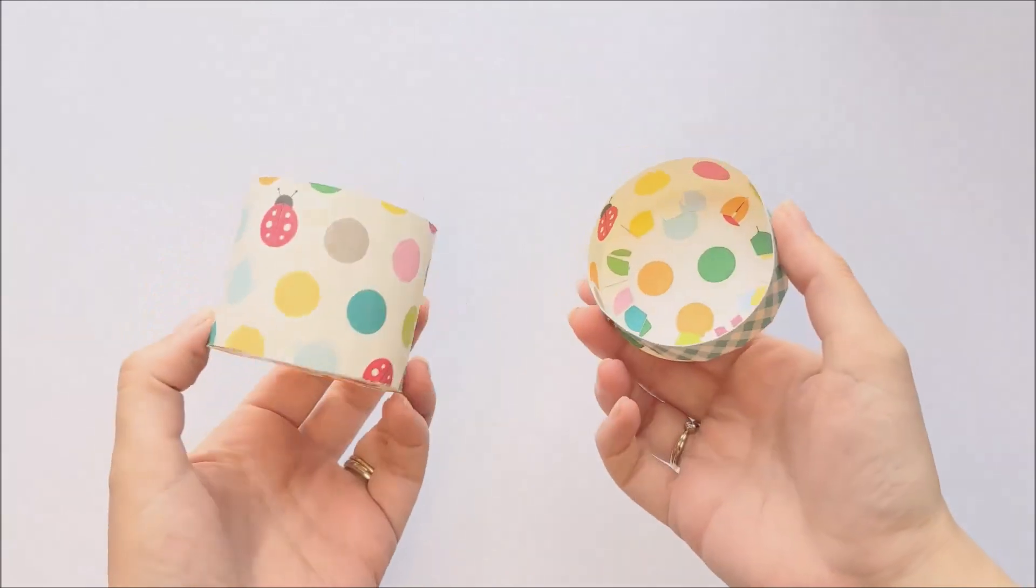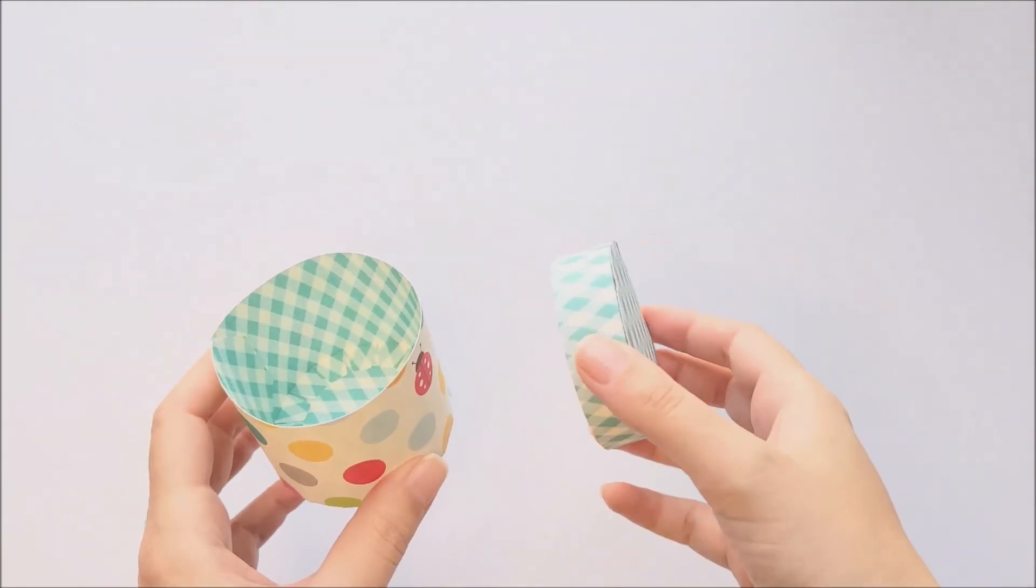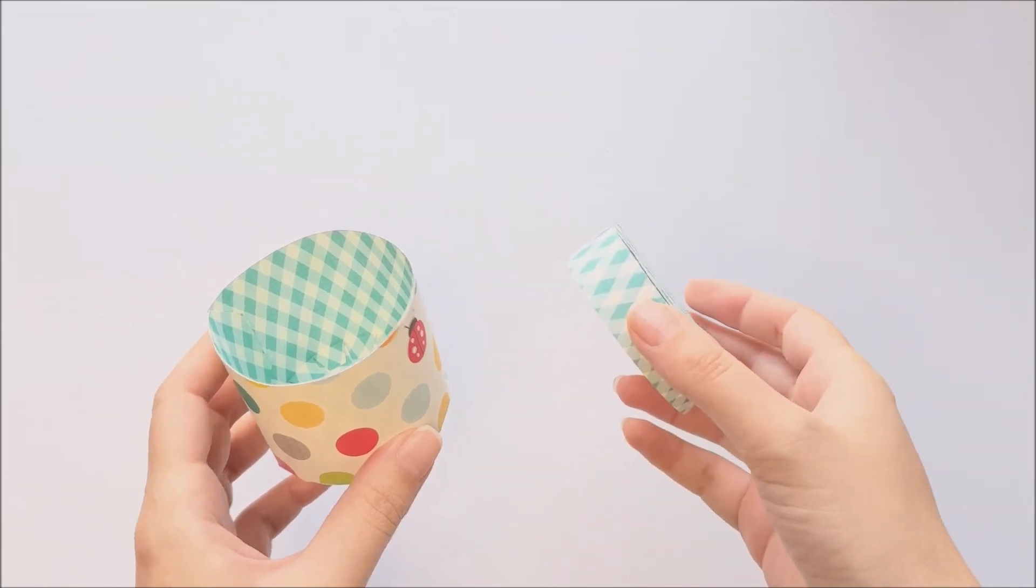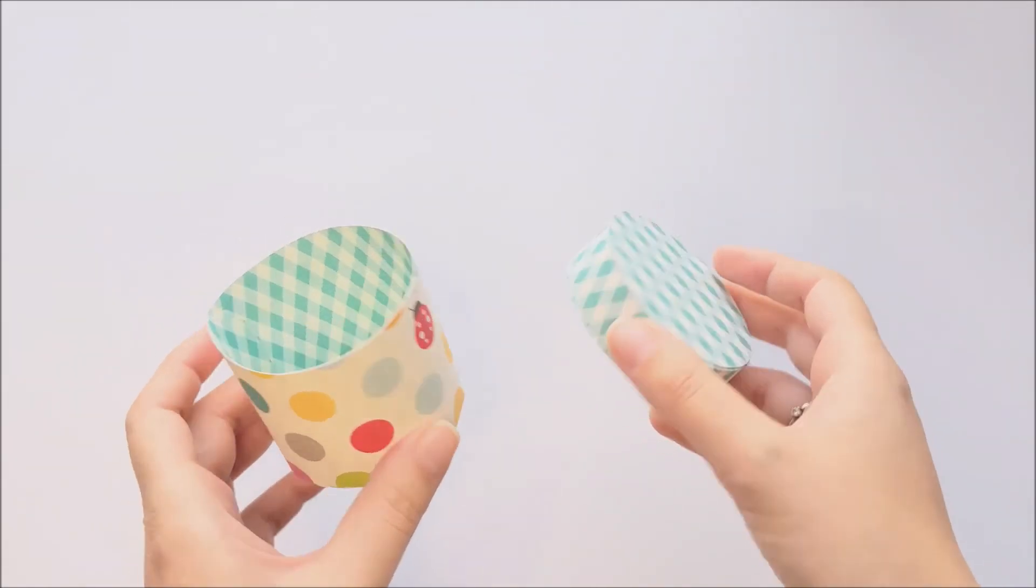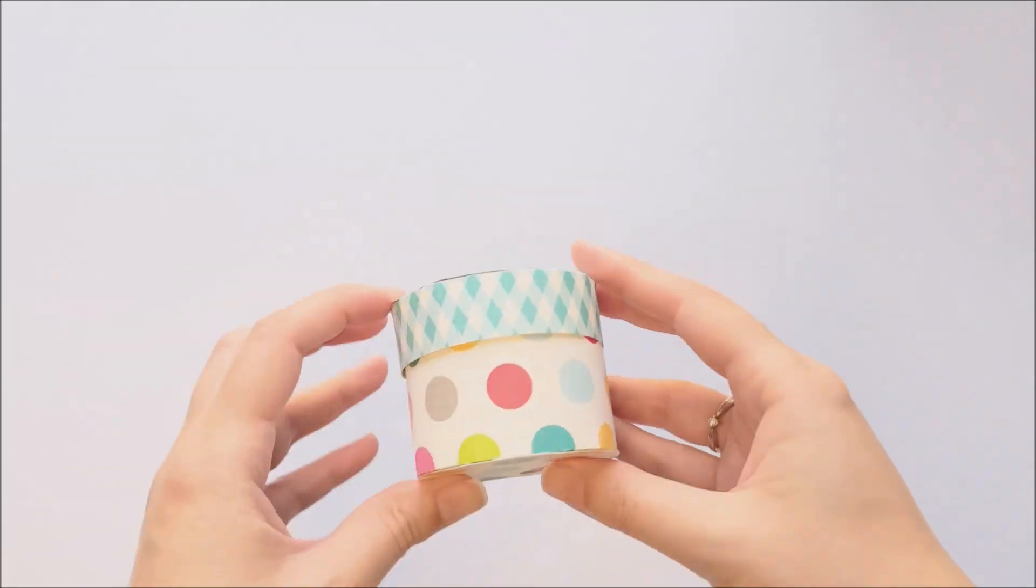And this is what the lid and the box look like when they're all done. If your design has a decoration on the lid, you would add that now, as well as any other additional embellishments you might like to add. And then you just fill your box and close your lid and you're done.